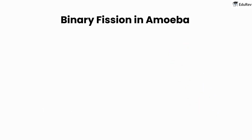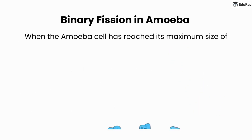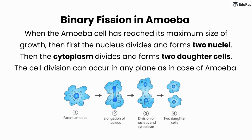Binary fission in amoeba: when the amoeba cell has reached its maximum size of growth, first the nucleus divides and forms two nuclei. Then the cytoplasm divides and forms two daughter cells. The cell division can occur in any plane, as in the case of amoeba.